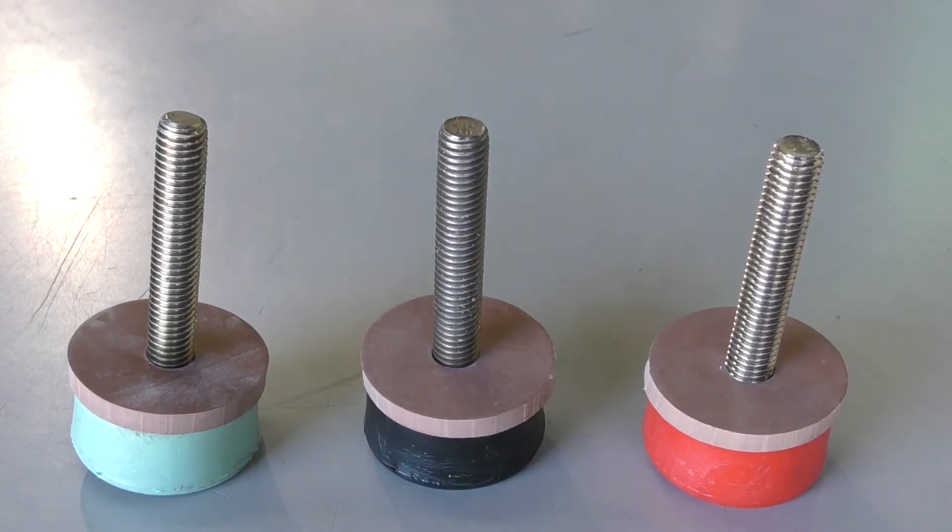The green encapsulated bolt is 316 stainless steel, the black bolt is titanium, and the red bolt is alloy C276.